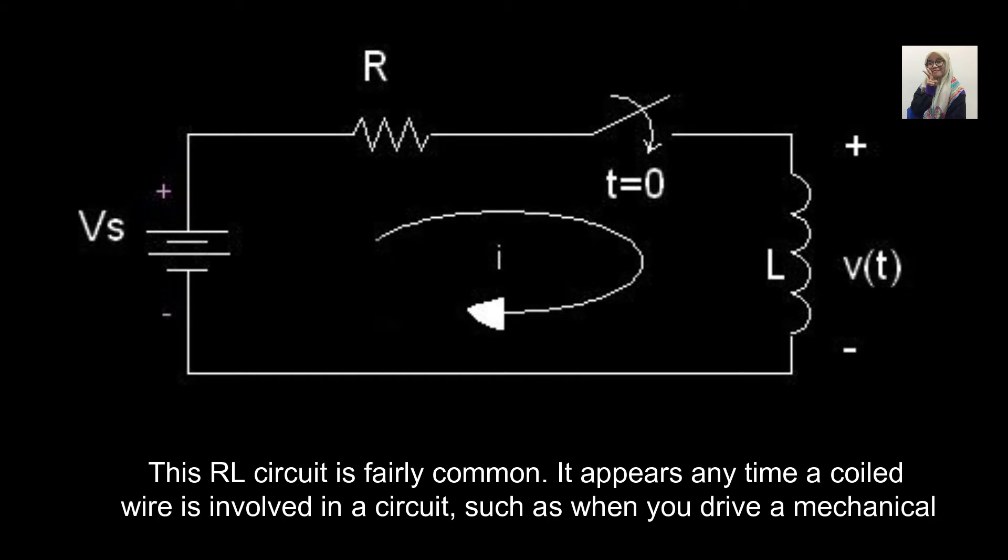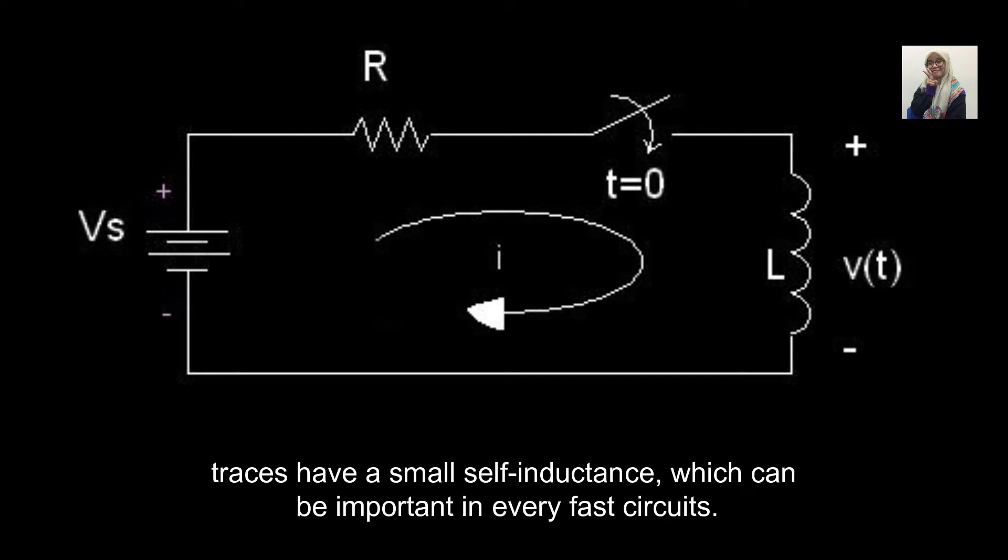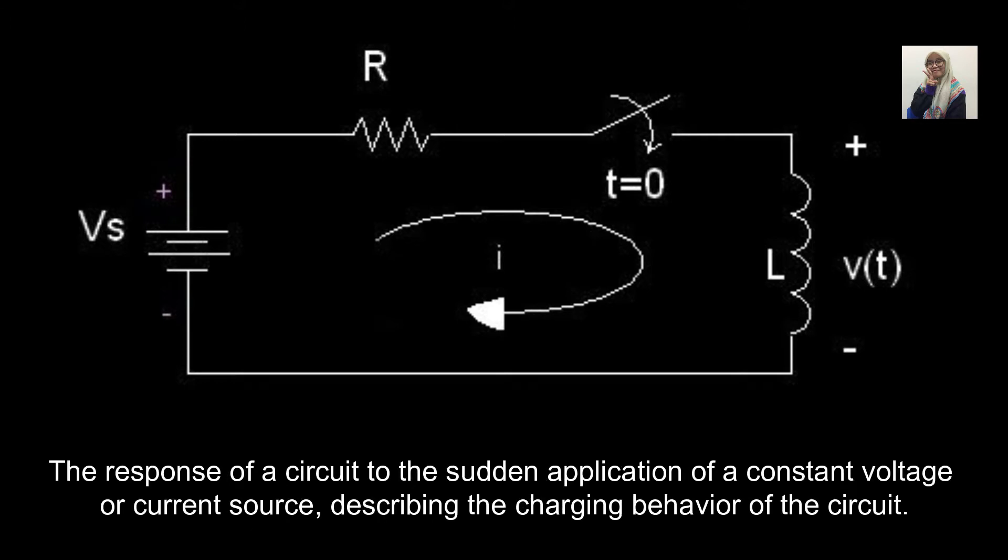This RL circuit is fairly common. It appears anytime a coiled wire is involved in a circuit, such as when you drive a mechanical relay to cause physical motion. Inductors are found in almost every power supply and in many filters. All wires and circuit board traces have a small self-inductance, which can be important in very fast circuits. The response of a circuit to the sudden application of a constant voltage or current source describes the changing behavior of the circuit.